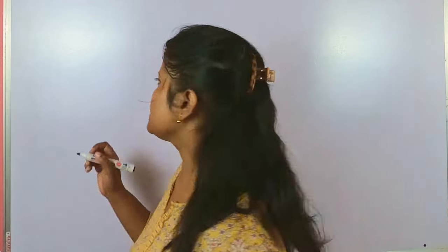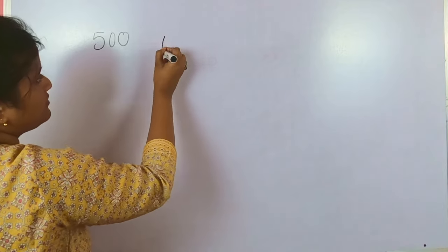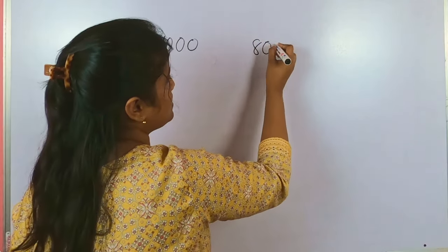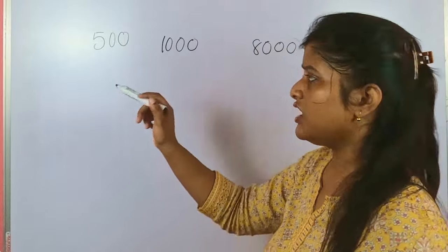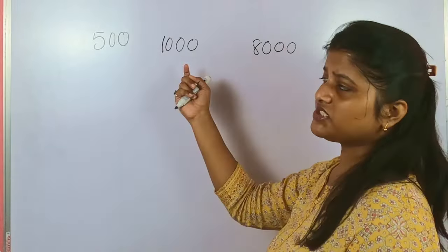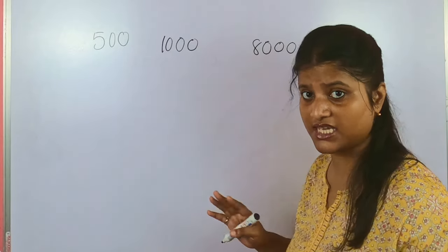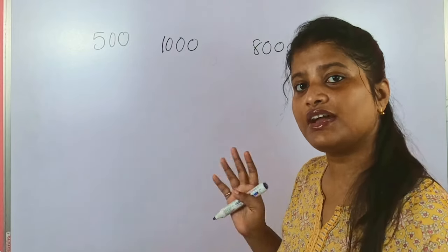Today we are going to start a topic named sequence and series. It's required in all of the modes for class 11. We'll talk about the sequence part today — sequence, AP, GP, that part. So what is a sequence? Suppose you go to a bank and deposit money every once in a while: 500 on the first day, then 1000, then 8000, then 700. This is what a sequence looks like.